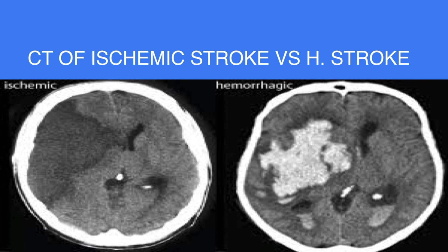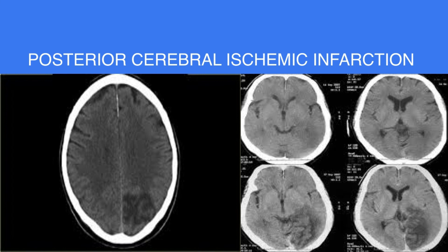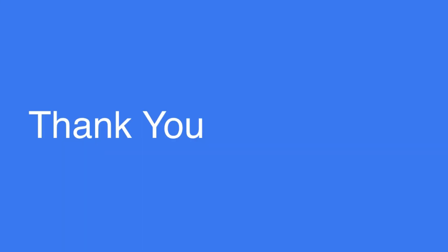This is a middle cerebral artery infarction. The one on the right is hemorrhage — hemorrhage is hyperdense, with density similar to bone, while infarction appears as a hypodense area on the brain CT scan. This is an extensive infarction probably involving the internal carotid artery because both anterior and middle cerebral artery territories are involved. The other CT scan shows intracerebral hemorrhage in the territory of the middle cerebral artery. This concludes our lecture. In the next lecture, treatment of stroke will be discussed. Thank you.